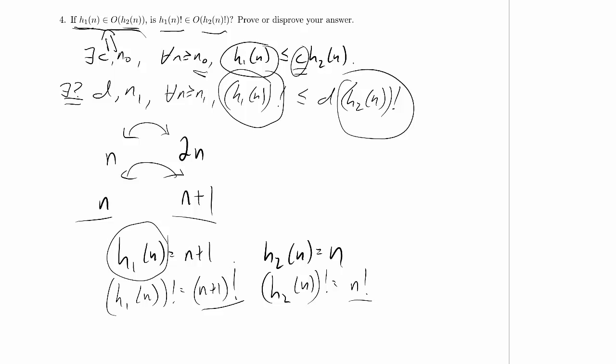How do n plus 1 factorial and n factorial compare asymptotically? I think we did this in class. It's a little counterintuitive. You look at these and you're like, it's just a plus 1, that doesn't matter. But that turns out not to be true. And it's easy to see if we take the ratio of these things. What is n plus 1 factorial divided by n factorial? Well, n plus 1 factorial for sufficiently large n is just n plus 1 times n factorial. And these will just cancel. So this is just n plus 1. That ratio goes to infinity.